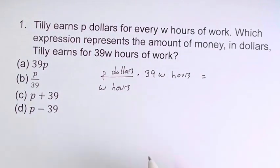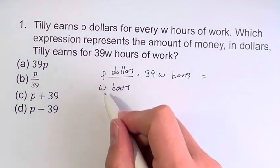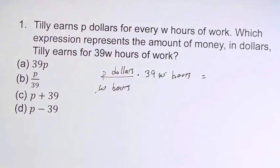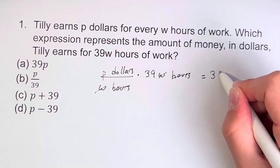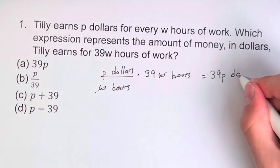What does this equal? Well, we can see that the hours cancel out on the top and the bottom. And so does this W, which means we're left with P times 39, which is 39P dollars. It's the only unit that's left.